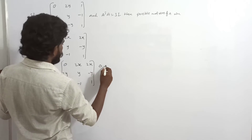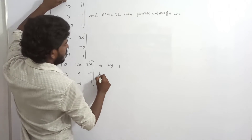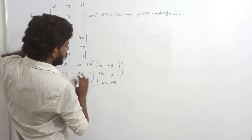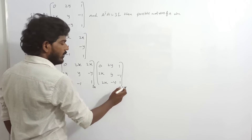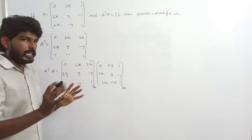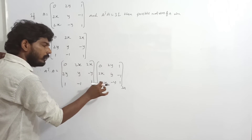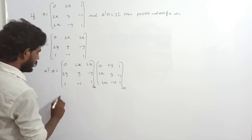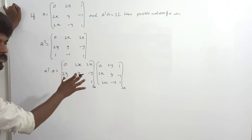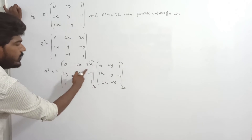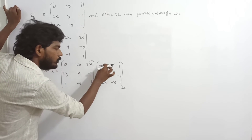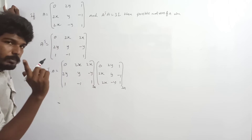Multiplying: first row first column gives 0 plus 4x squared plus 4x squared equals 8x squared. First row second column gives 2xy minus 2xy equals 0. First row third column gives 0 minus 2x plus 2x equals 0.